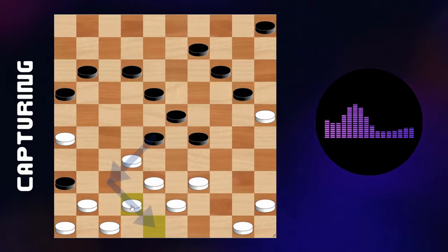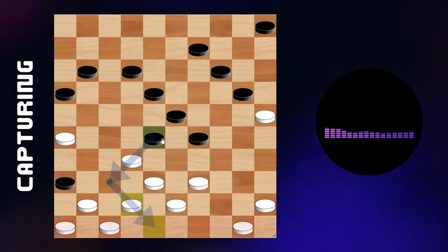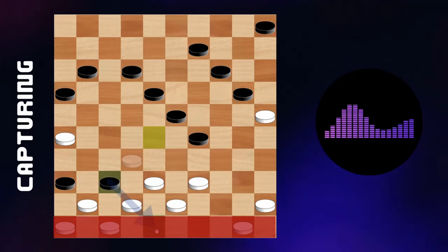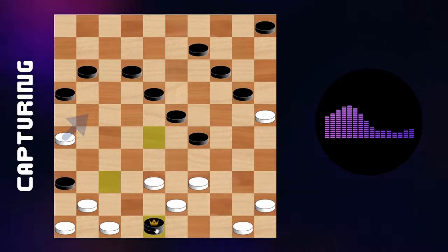If a piece ends its turn on a square at the other edge of the board, thus on the back line of the opponent, it is crowned and promoted into a king. Popularly called Akroma in Ghana, which means Hawk.